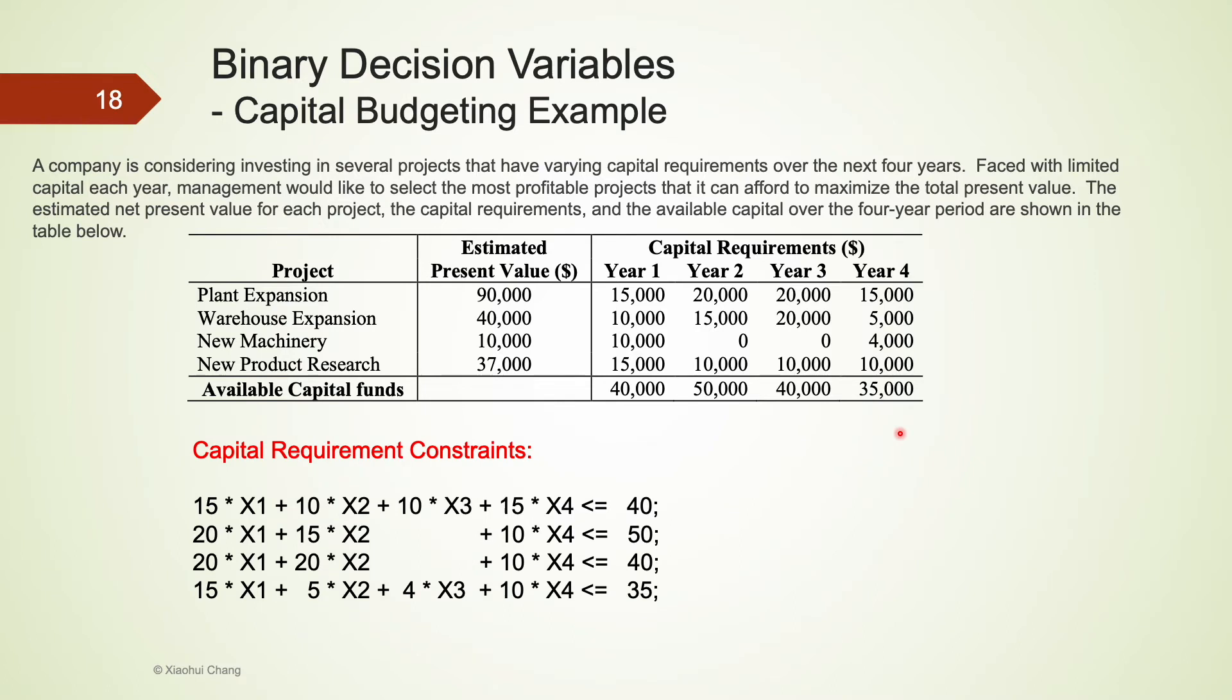The constraints in this problem are all capital requirement constraints. For example, in year 1, the available capital is $40,000. In this year, if the company invests in all four projects, the total capital requirement in year 1 will be 15 plus 10 plus 10 plus 15, that is $50,000. This is actually higher than the available capital of $40,000. So it is not possible for the company to invest in all four projects.